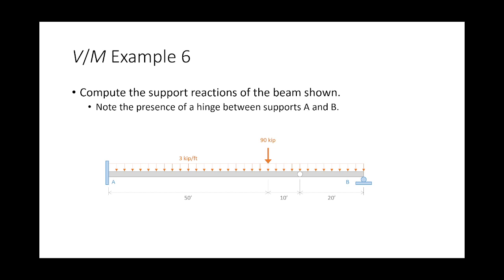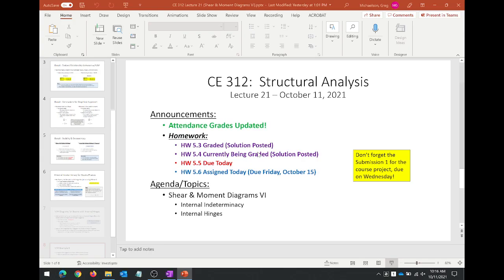When you construct the shear and moment diagram correctly, you'll find that the internal moment is zero at the hinge — already taken into account because you used that fact to compute the reactions. Our task: a beam with a fixed support at A, a roller at B, an internal hinge, distributed loads, and concentrated loads. We need to draw the shear and moment diagram from start to finish.